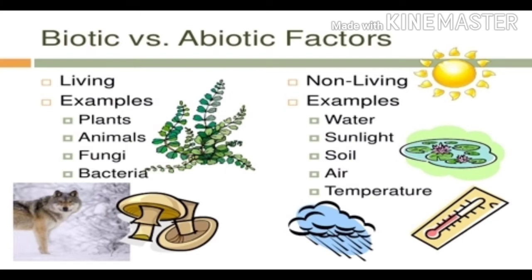Abiotic resources are resources that we get from non-living things, such as soil, metal, minerals, and stone. These resources can be exhausted by excess use.